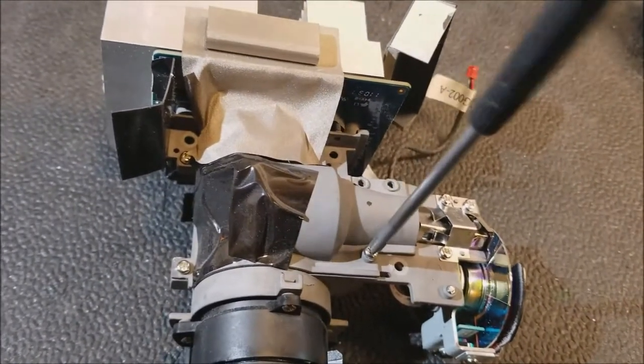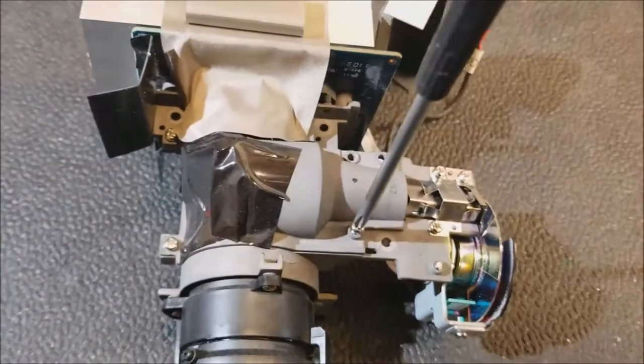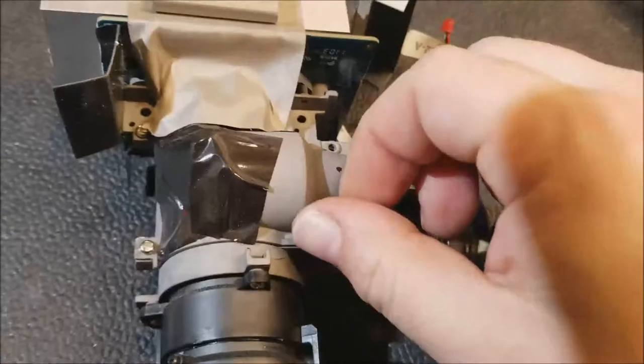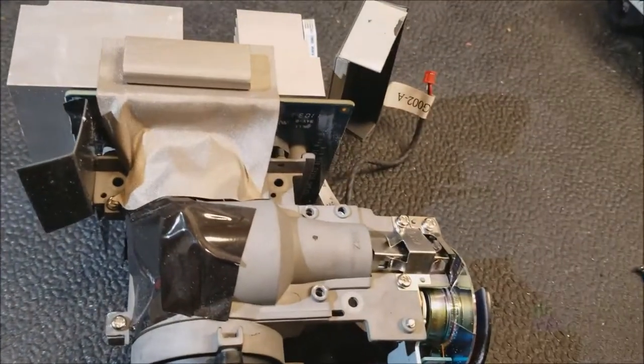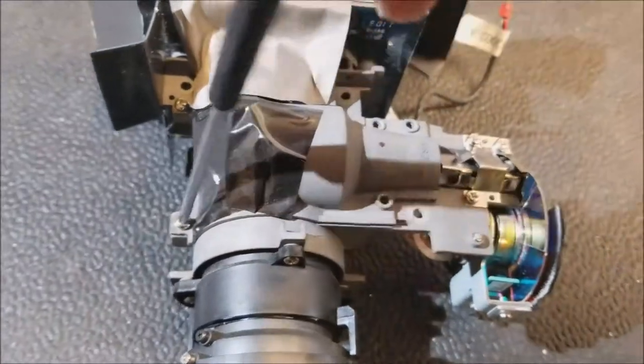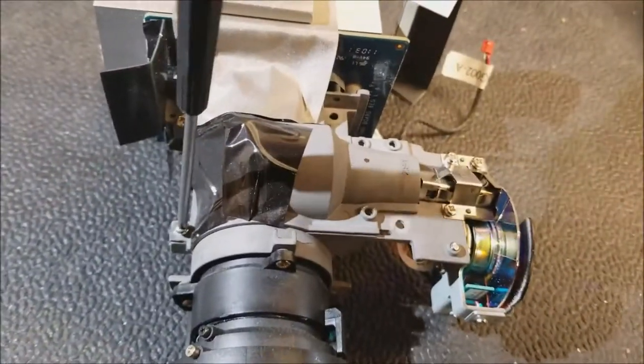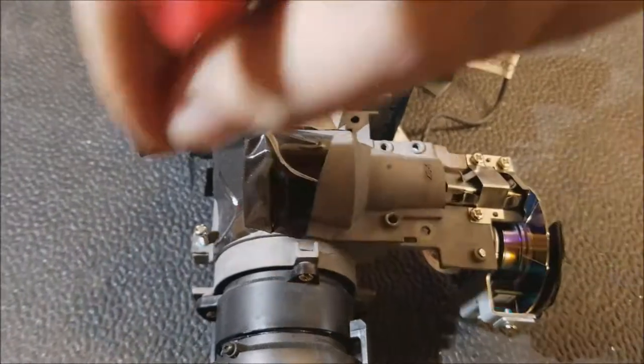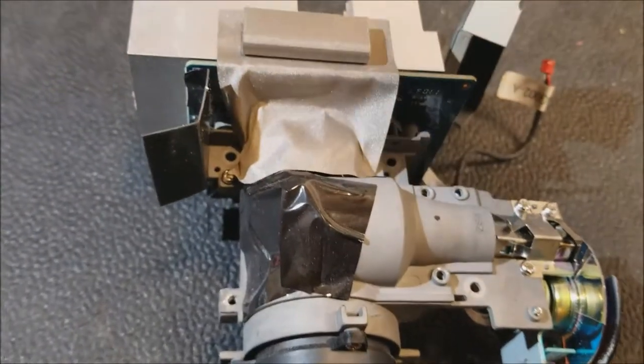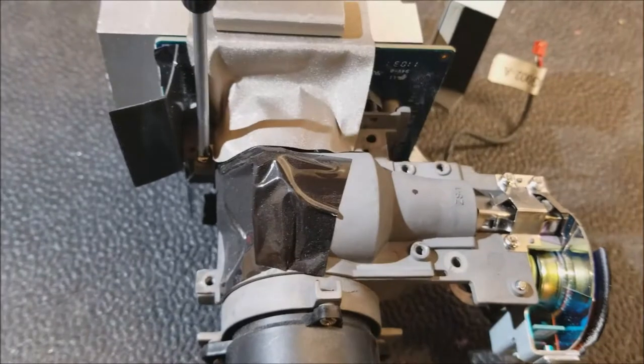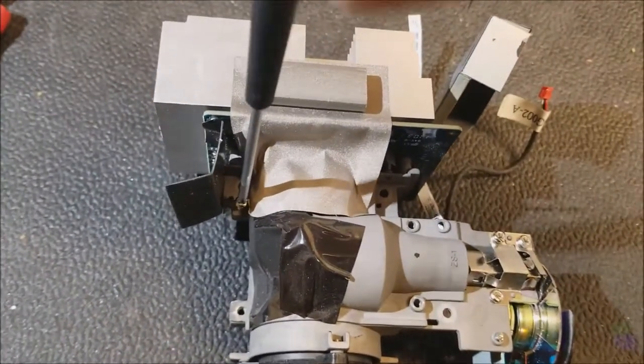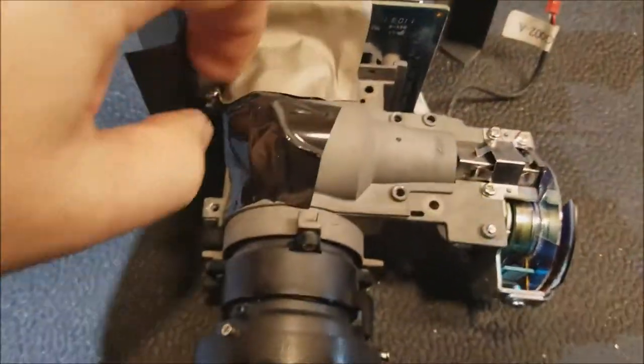There's five screws that have to come out. There's one here, which I already took out. There's this one. And then one over here. And again, I'm doing this without a tripod, so please bear with me. And then I believe this is the last one. We're going to peel this grounding tape back.